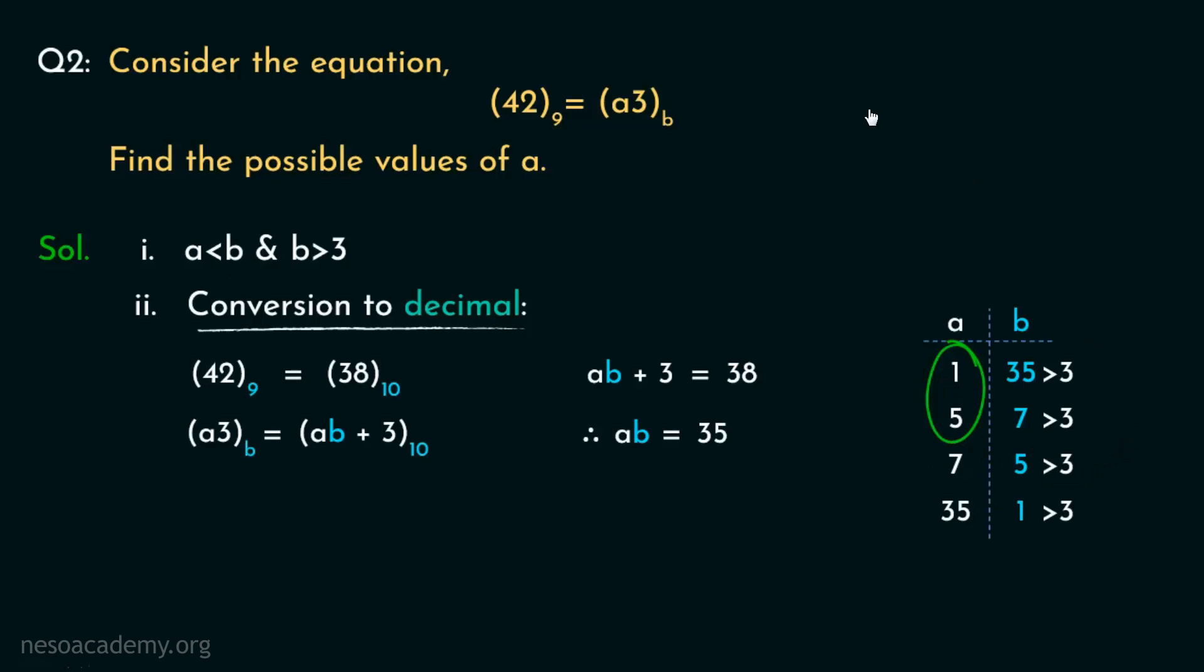So, to sum up, in order to solve these kind of questions, we will first list down all the conditions. Then we will perform conversion to decimal for all the sides. And thereafter, we will perform the comparison. With the help of the outcome, we will then determine the possible values. If you observe closely, these are actually all the factors of 35. For a, these are enlisted in ascending order, whereas in case of b, these are enlisted in descending order. So, after enlisting all the possible sets, if we judge the sets based on the previously determined conditions, we can figure out the possible values.